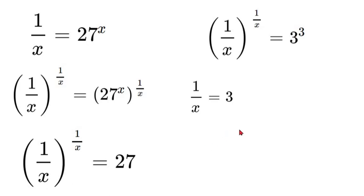Now we are going to multiply both sides by x so that we can cancel out the x on the left side, which will leave us with 1 is equal to 3x. Then we'll divide by 3 and our final answer x will be equal to 1 over 3.